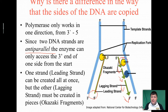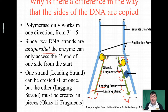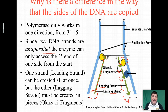The one that's produced continuously is called the leading strand. The one that's produced discontinuously is called our lagging strand. The way to think about this is that the leading strand is finished first — it's leading the way — while the other one lags behind because we have to wait until it's unzipped before we can start adding new bases.